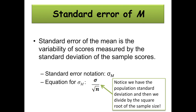Standard error of the mean. The standard error of the mean is notated as sigma sub M. It is the variability of scores — how much the scores differ from one another, measured by the standard deviation of the sample scores. It's calculated as the standard deviation divided by the square root of N.